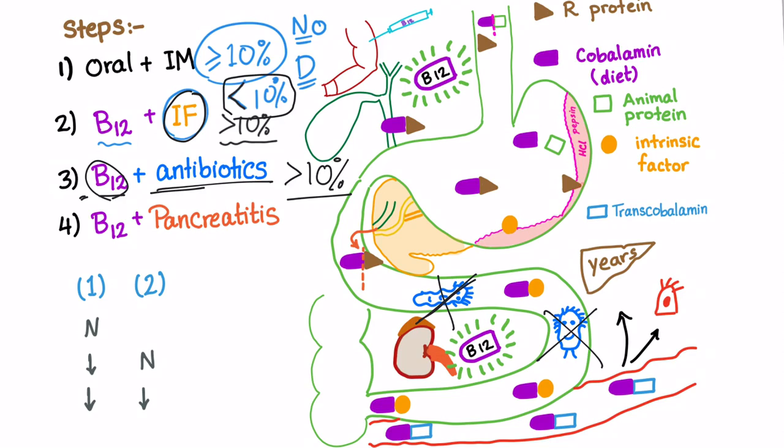Still did not normalize. Let's go to the next step: B12 plus pancreatic enzymes. What if it normalizes and it's now more than 10%? This patient has chronic pancreatitis. The pancreas is damaged and demolished and in a very bad shape.